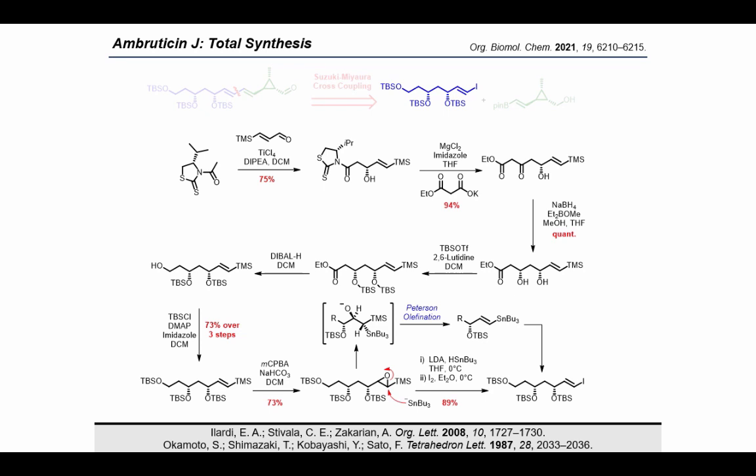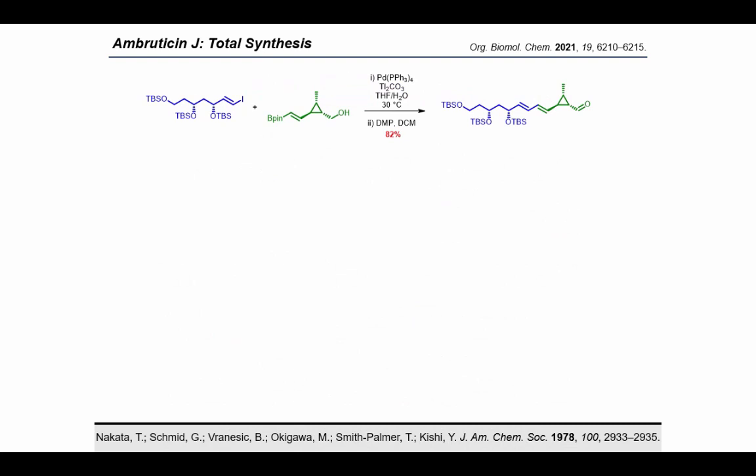With the new vinyl iodide in hand, we attempted the Suzuki-Miyaura cross-coupling again, and we were pleased to find that the Suzuki proceeded smoothly. After oxidation, it provided the desired aldehyde in excellent yield over the two steps. We found that thallium carbonate was an excellent base for this reaction, albeit toxic, as it facilitated shorter reaction times and low temperatures, preventing any degradation products such as cyclopropane ring opening.